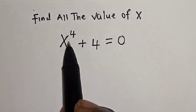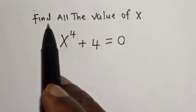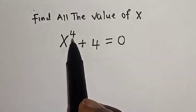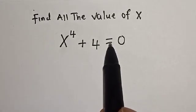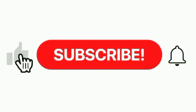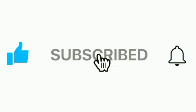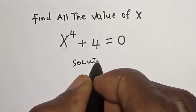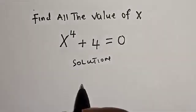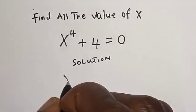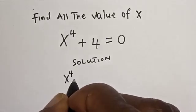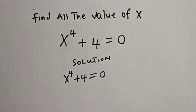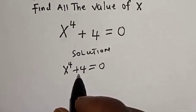Hello, welcome to Magist. In this class we want to find all the values of s from this given equation: x raised to power 4 plus 4 is equal to 0. Solution: we have the given equation s raised to power 4 plus 4 is equal to 0.